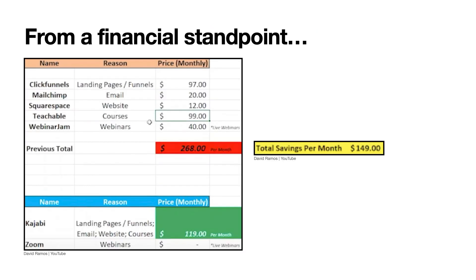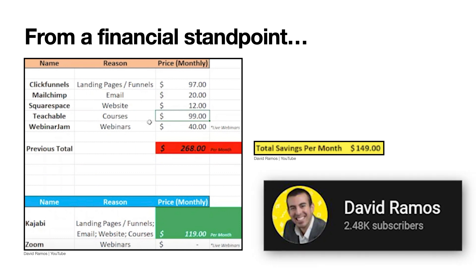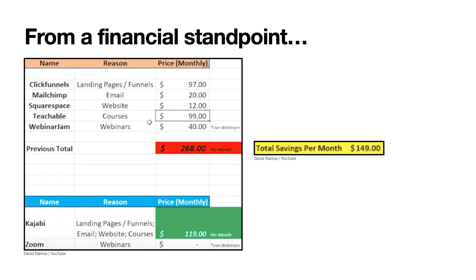From a financial standpoint, thanks to David Ramos on YouTube, if you add up all the monthly costs of ClickFunnels, MailChimp, Squarespace, Teachable, and WebinarJam, it comes out to around $268 per month based on current pricing — somewhere around $200 to $268 per month. If you use Kajabi, it's going to be significantly less than that, so you will save a good amount of money.